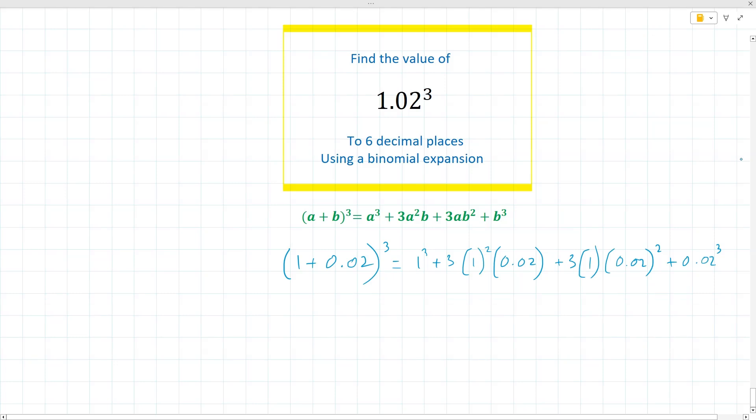OK, so if we simplify those terms, we should get what we want. So 1³, that's just one times one times one, which is one. And then we'll have 3 times 1², which is three. So 3 times 0.02 and then 3 times one times 0.02 squared. So we can say 3 times 0.02² and then 0.02³.